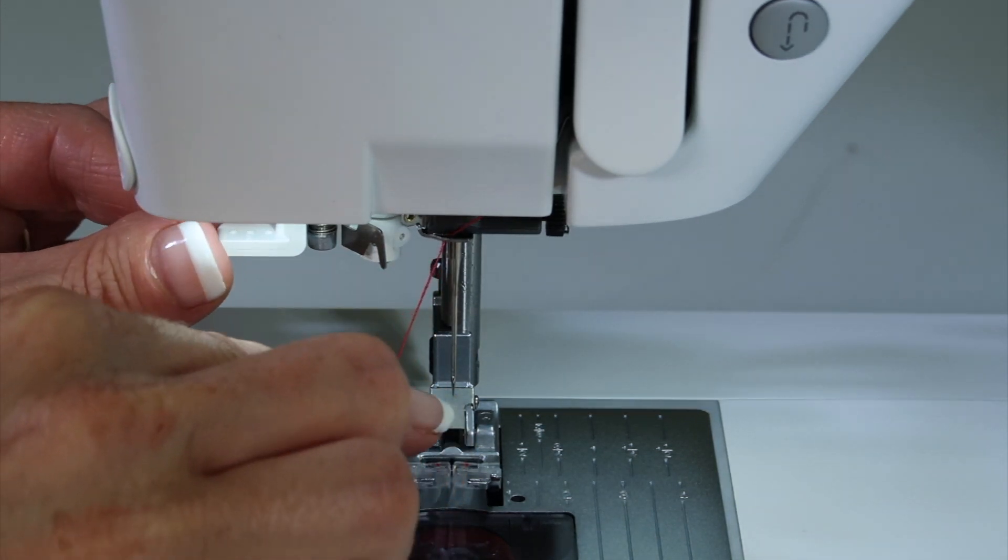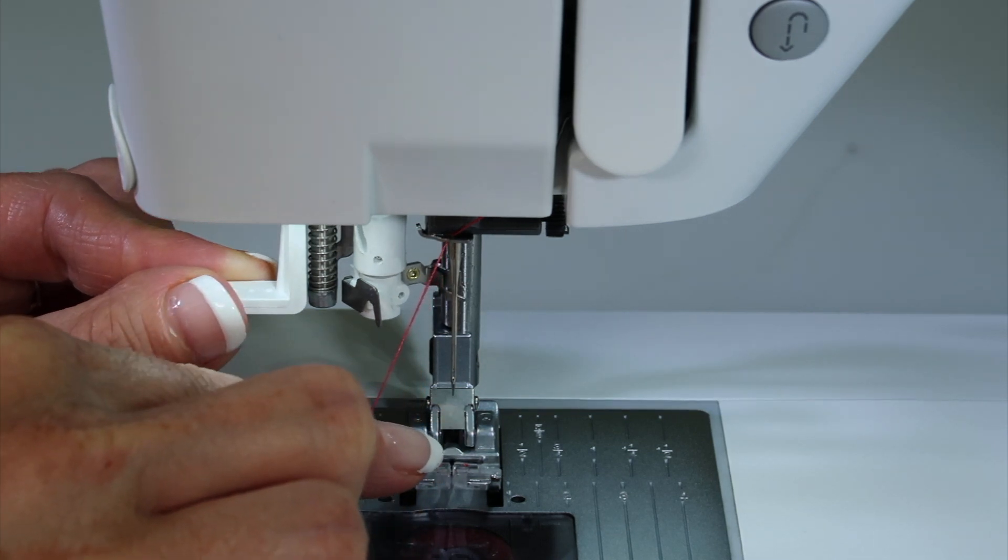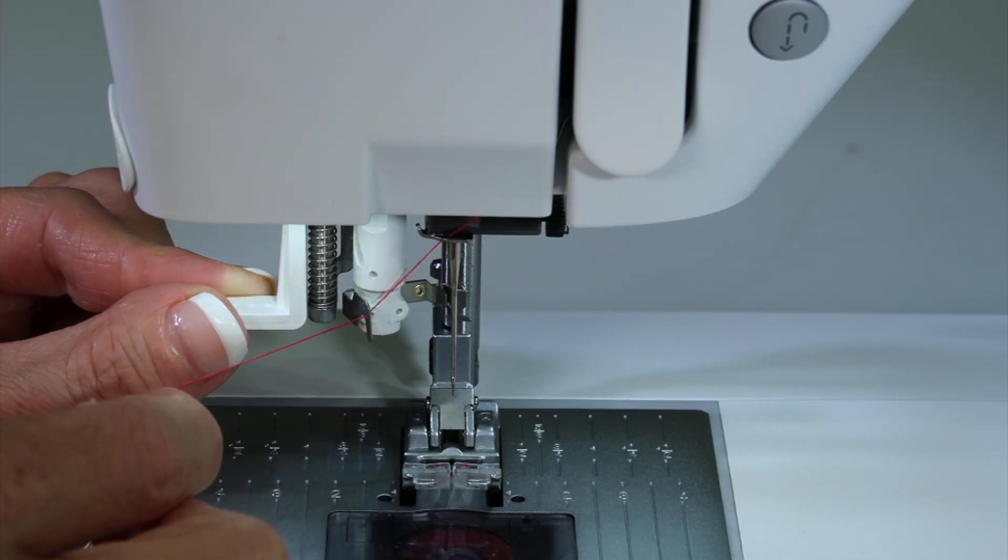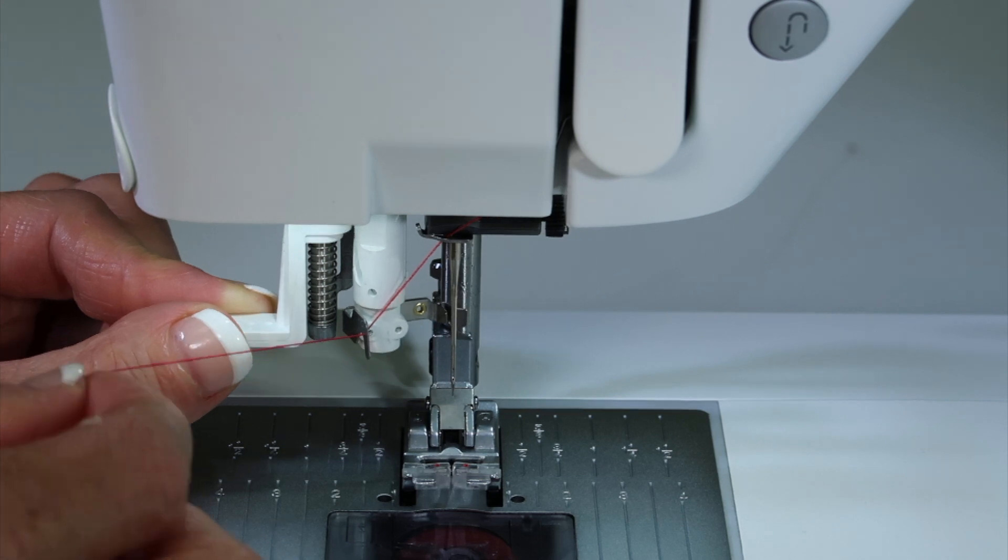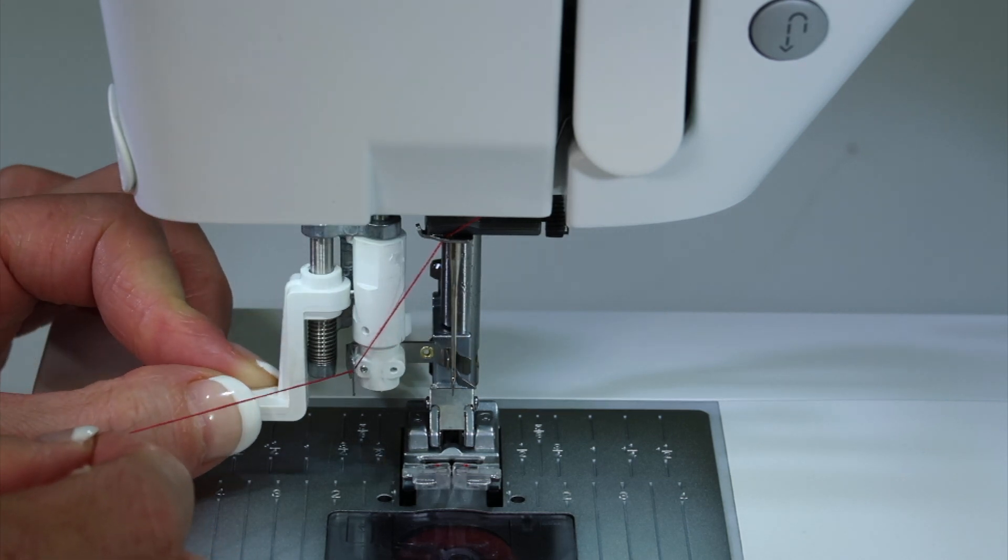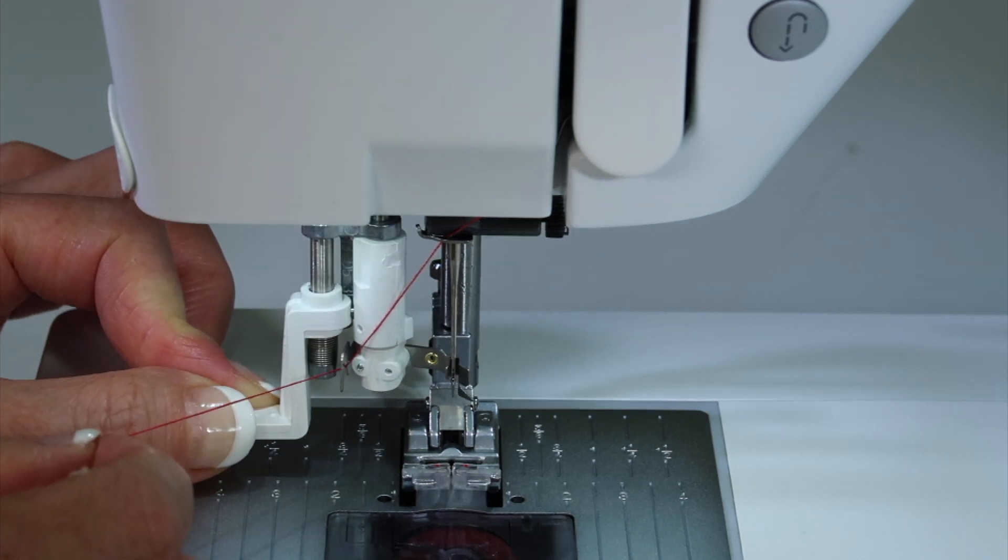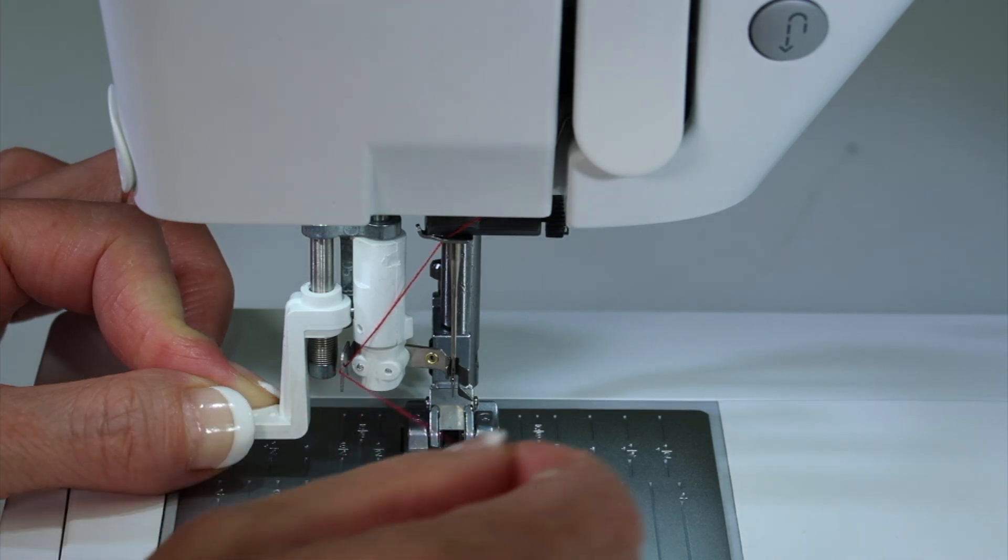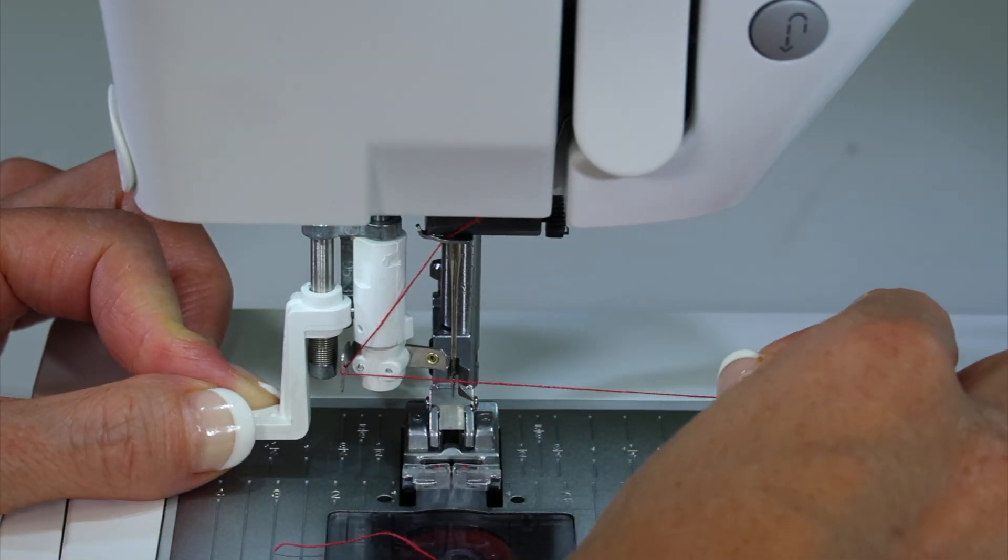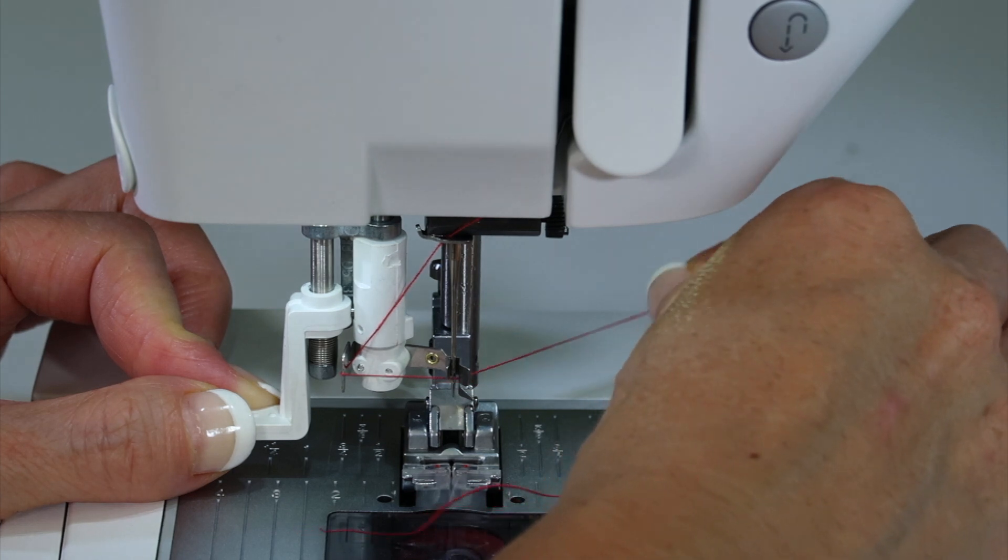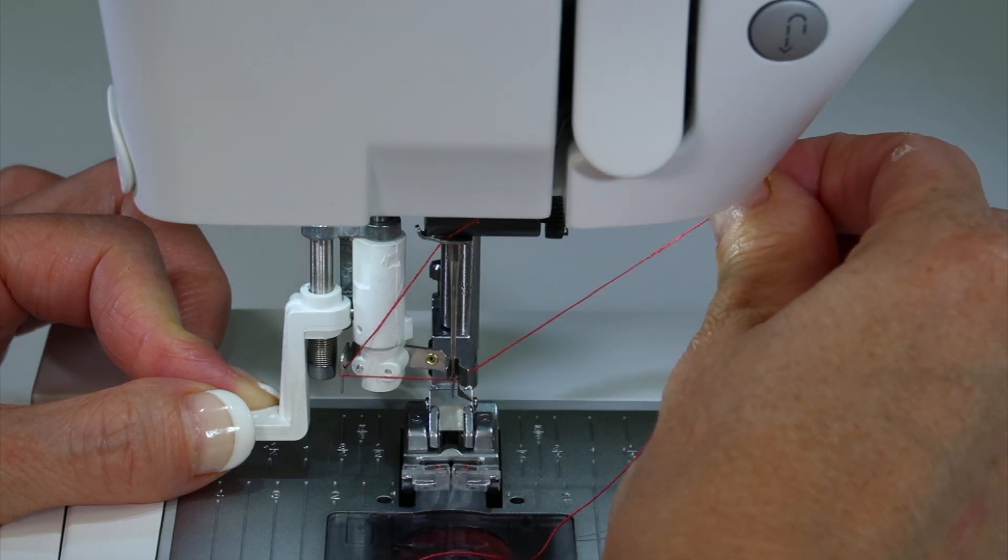Here's what we want to do. When you bring your needle threader down part way, take your thread and come underneath that little arm. Bring your needle threader down all the way next and hold it firmly at the lowest position. Then bring your thread over to the needle between those two little arms and then lift up just a little bit.